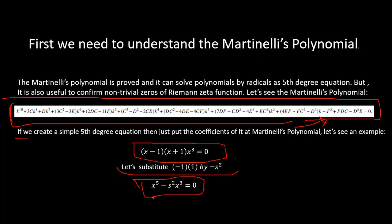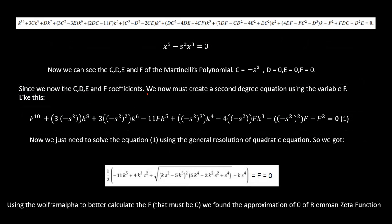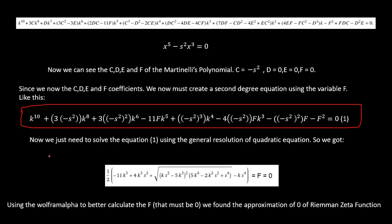We get: x to the power 5 minus s squared times x to the power 3 equals 0. Now we can see the C, D, E, and F coefficients of the Martinelli's polynomial: C equals minus s squared, D equals 0, E equals 0, F equals 0. Since we know C, D, E, and F, we can create a second-degree equation using the variable F.